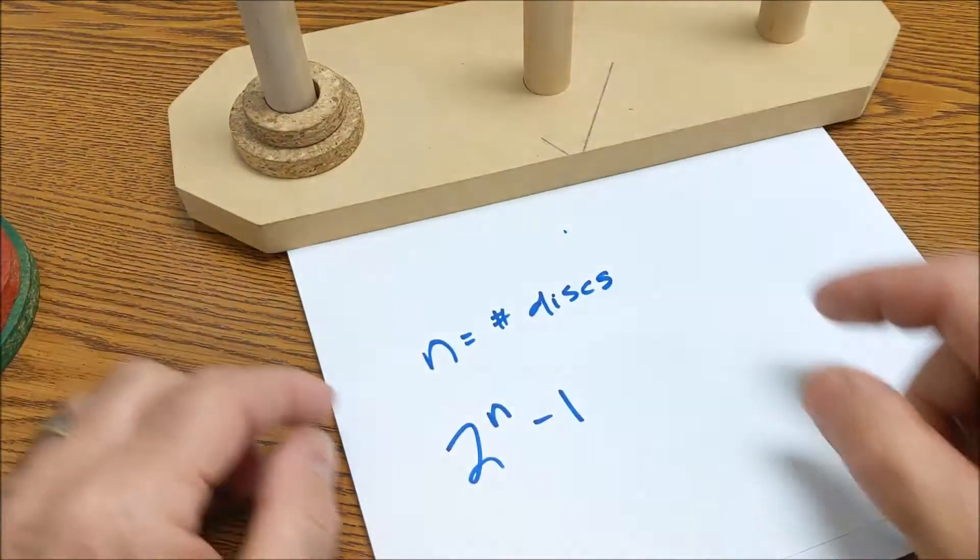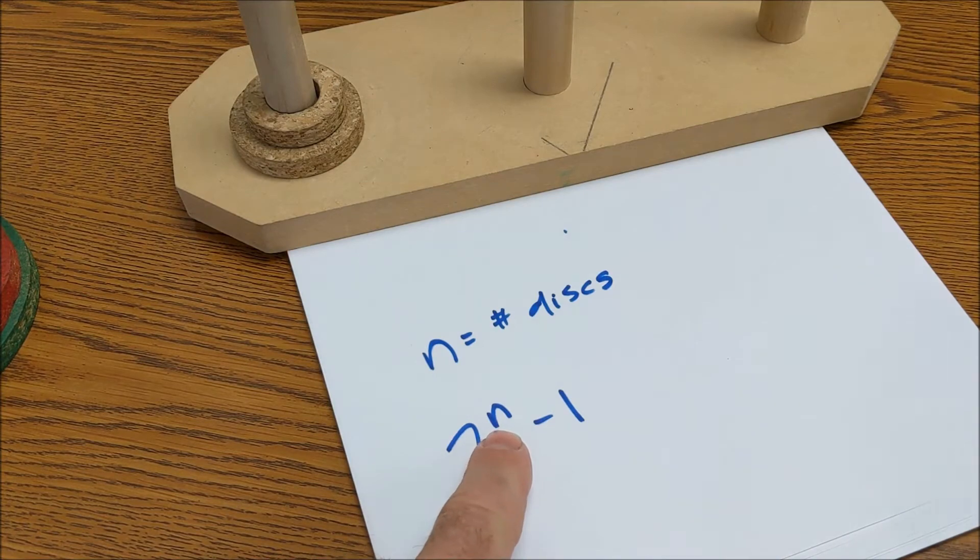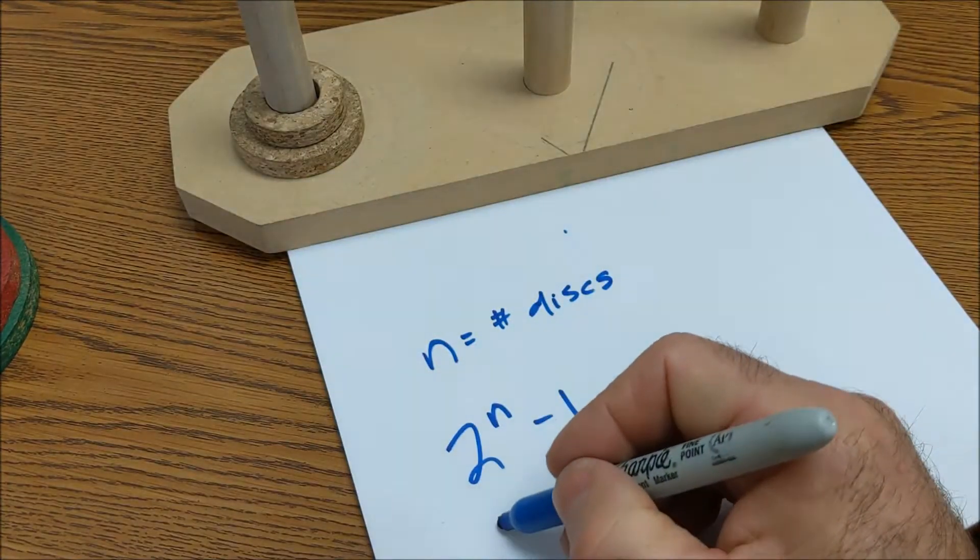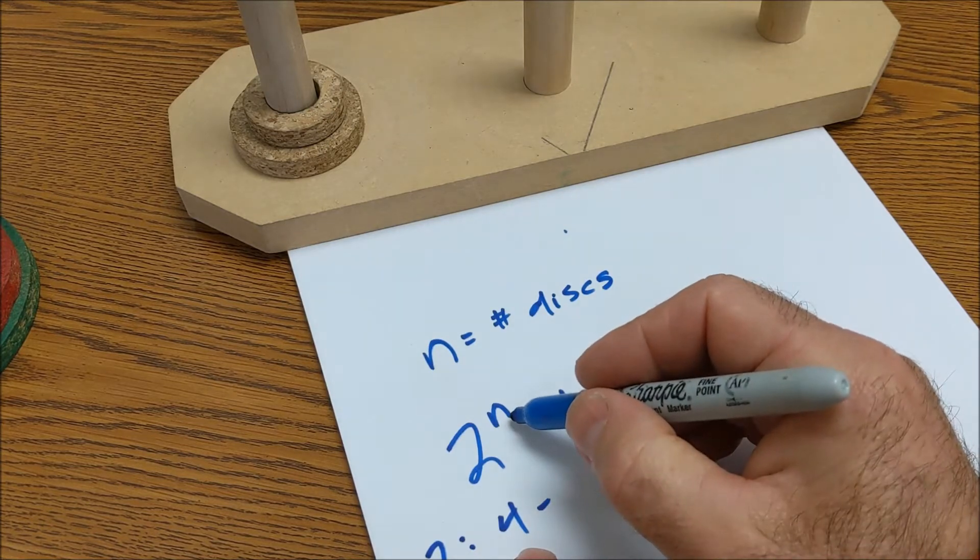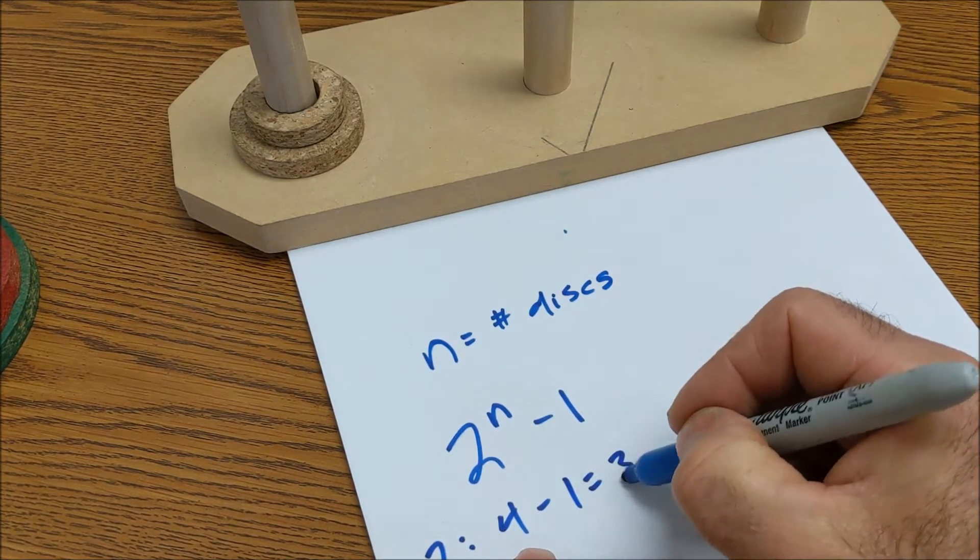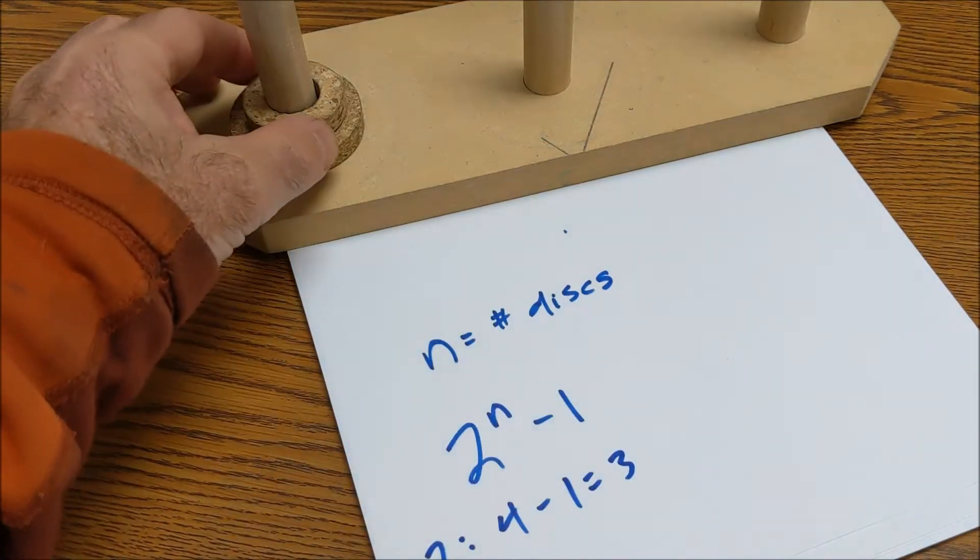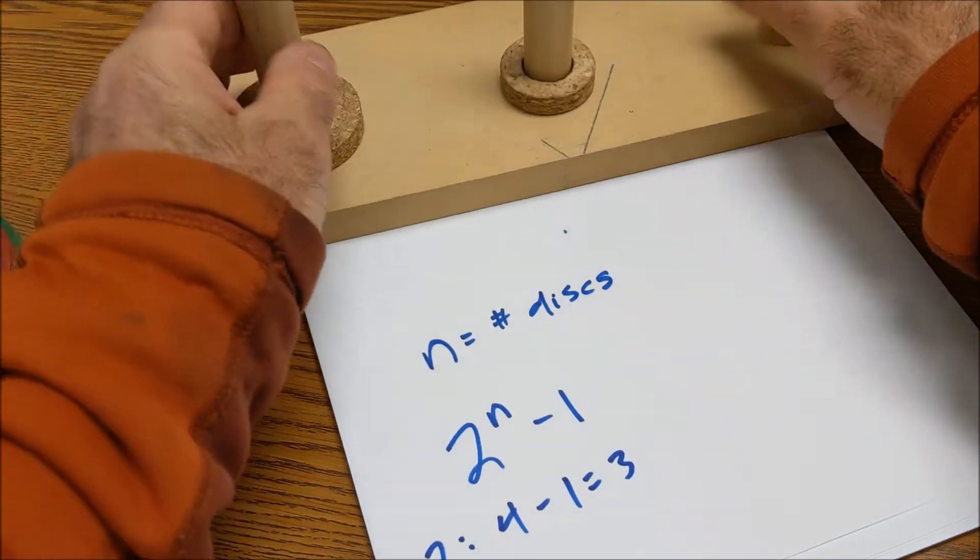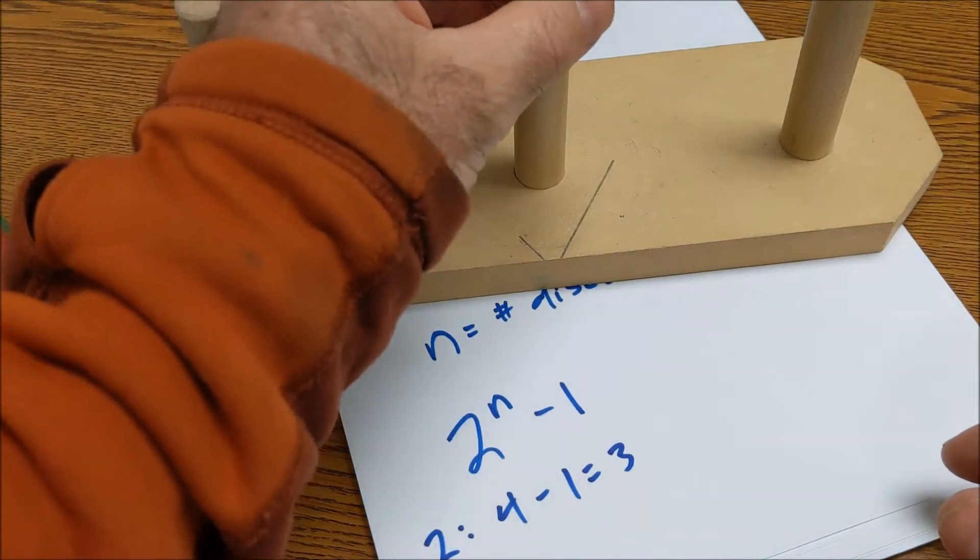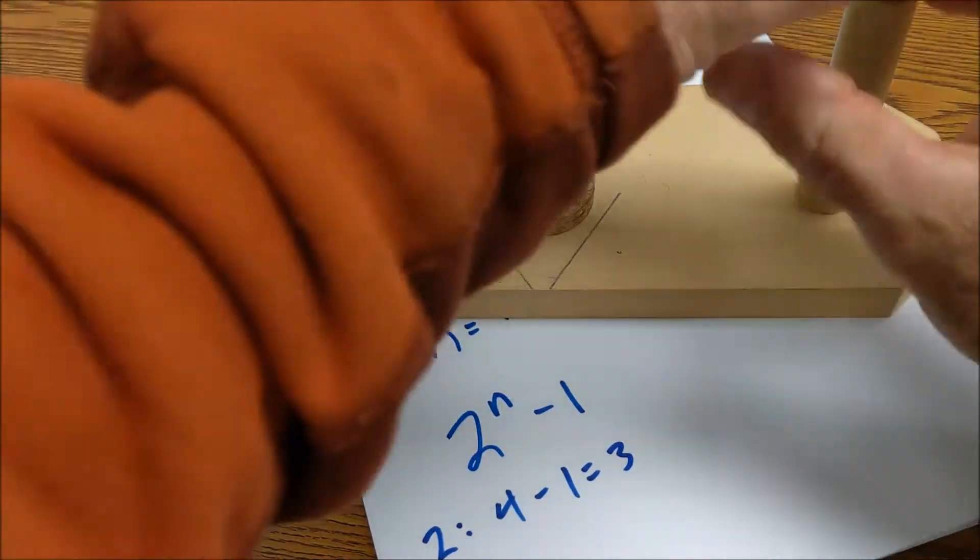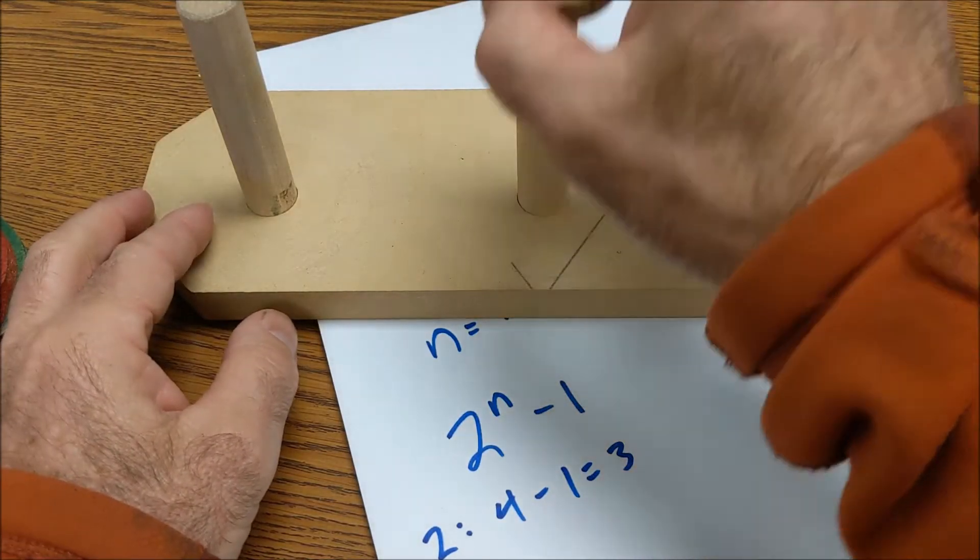If I have two disks, 2 to the 2, 2 squared is 4. So if I have two disks, 2 to the squared is 4 minus 1. There's three ways to do it, or three moves. Here's one move, two moves, three moves.